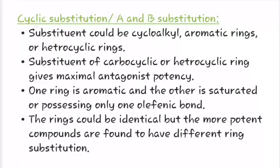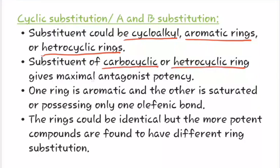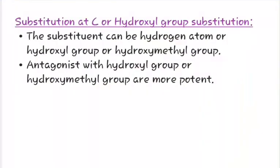Now we will study about cyclic substitution, or A and B substitution. In A substitution, the substituent could be cycloalkyl, aromatic ring, or heterocyclic ring. Substituents of carbocyclic or heterocyclic rings give maximal antagonist potency. In A substitution, one ring is aromatic and the other is saturated or possessing only one olefinic bond. The rings could be identical, but the more potent compounds are found to have different ring substitutions.